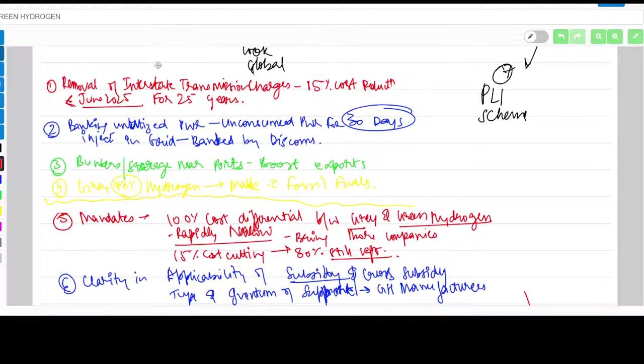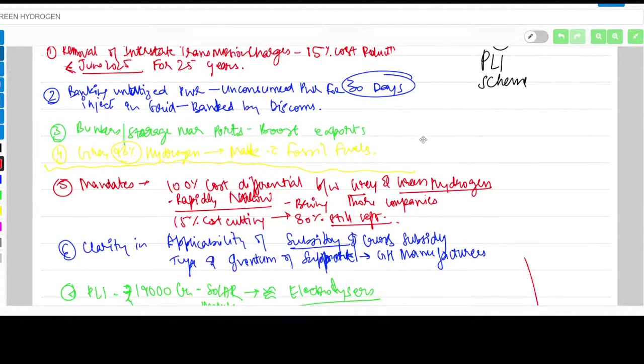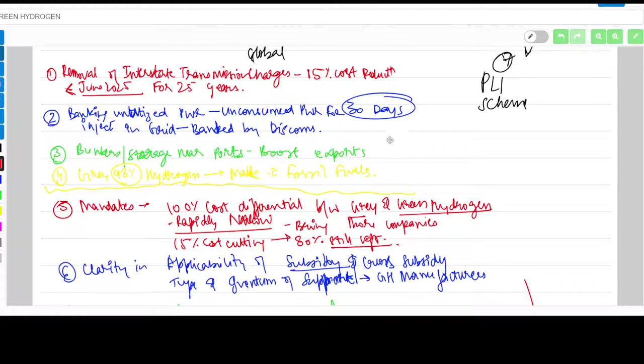The first point is removal of interstate transmission charges. When gas is transferred from one state to another, the government announced there will be no interstate transmission charges for 25 years if the plant is put in function before June 2025. This would lead to about 15% cost reduction in production of green hydrogen, which is very expensive especially for electrolyzers and storage.